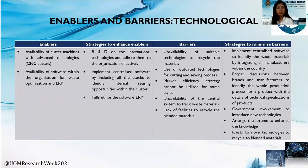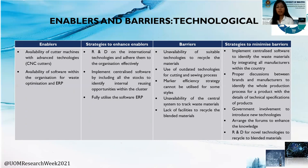Under strategies: empower the local manufacturers to reduce the environmental pollution from foreign transportation of materials. Under technological enablers: availability of CNC cutter machines, which are most efficient and effective, and availability of software within the organization for waste management, such as ERP-based optimization. Under strategies: R&D on international technologies, increment centralized software to include all stocks, and identify internal reusing opportunities within the organization. Under barriers: unavailability of suitable technologies to recycle materials, and use of outdated technologies are one of the major barriers. Under strategies: proper discussion between brands and manufacturers to identify the whole production process and technical specifications of products.